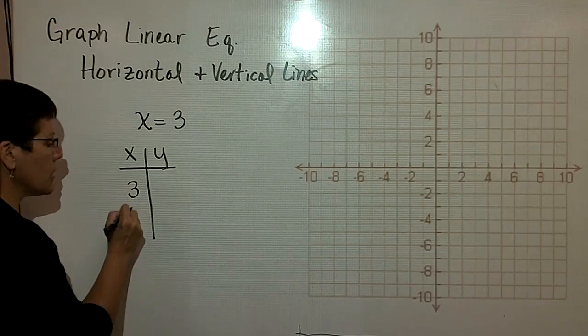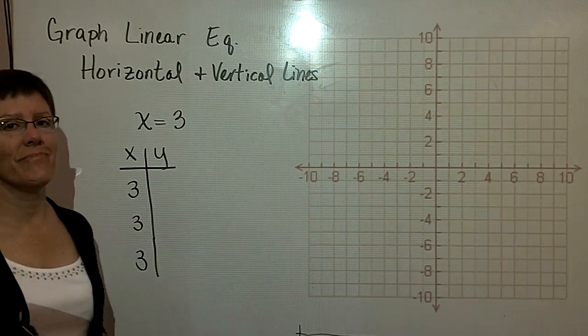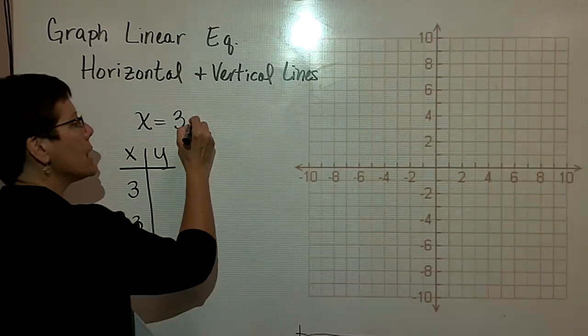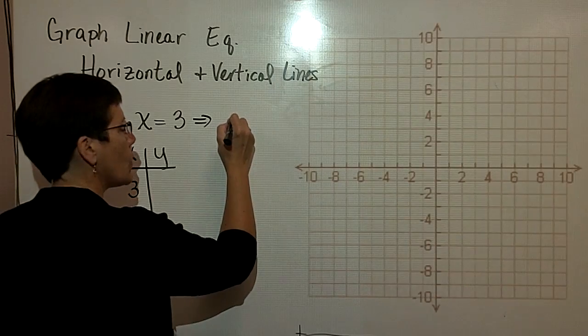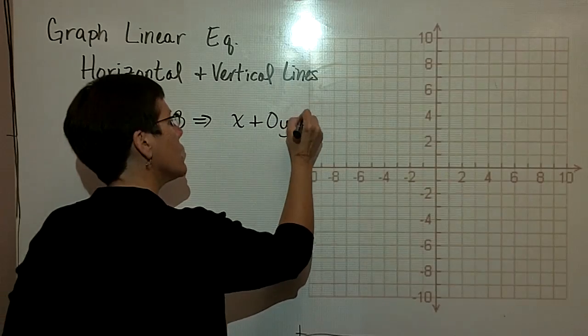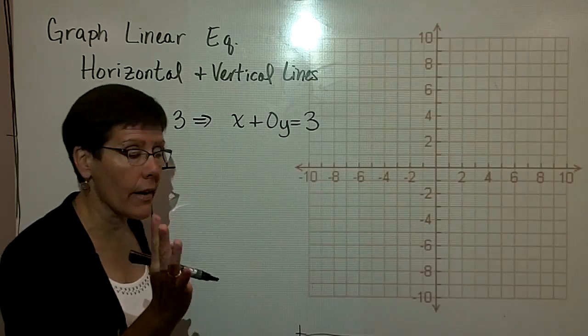But what I'm going to suggest is that you do that. X is always equal to 3. Many publishers will suggest that you think of this equation as x plus 0 times y equals 3. Because 0 times y is nothing, so it's really not there.